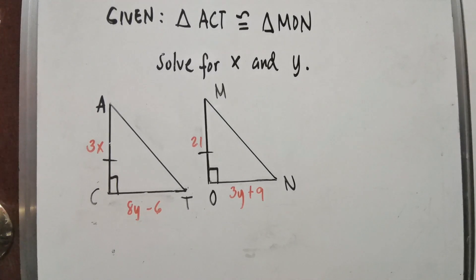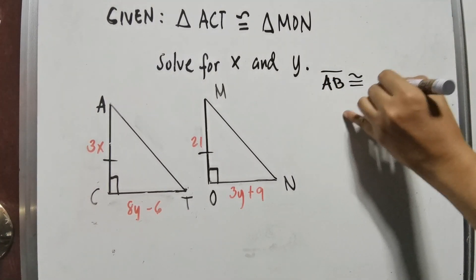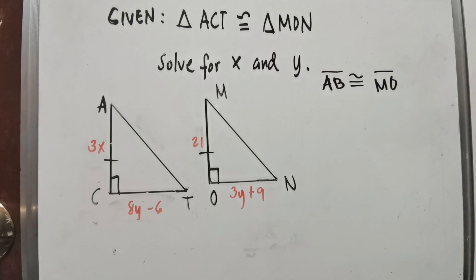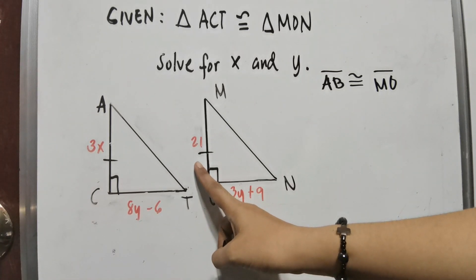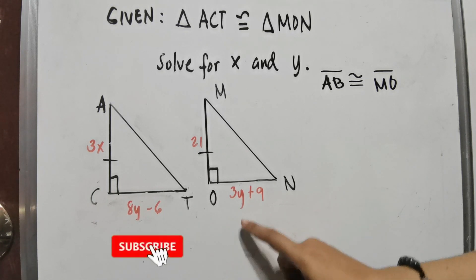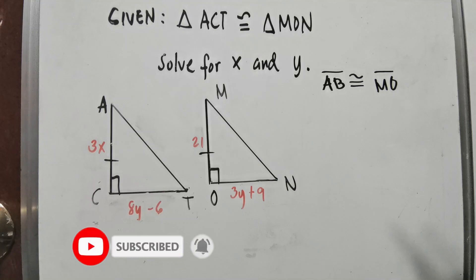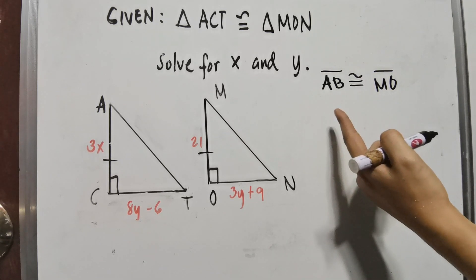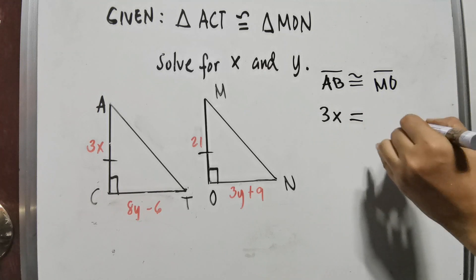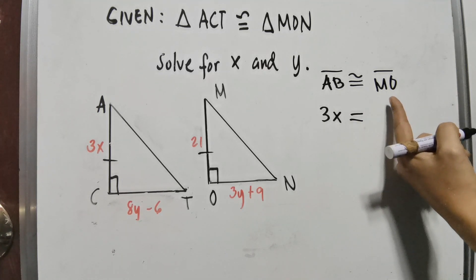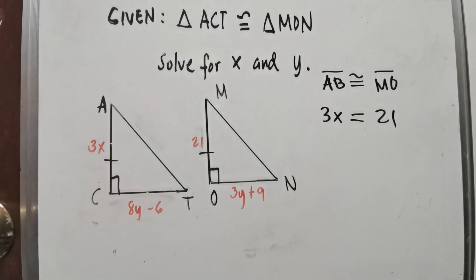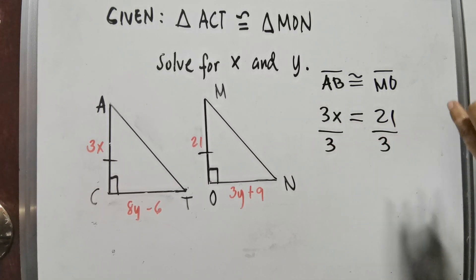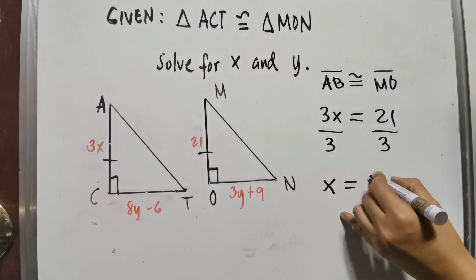Ibig sabihin, the measurement of line segment AC will be the same as the measurement of line segment MO. It is easy because the measurement 21 is already given on the other triangle. All we need to find is the value of X. To solve that, substitute: 3X is equal to 21. Divide both sides by 3, and we get X equals 7.